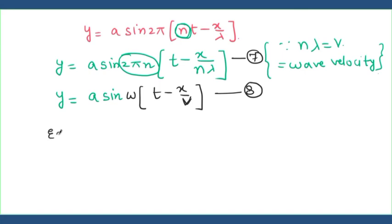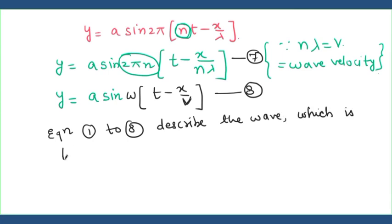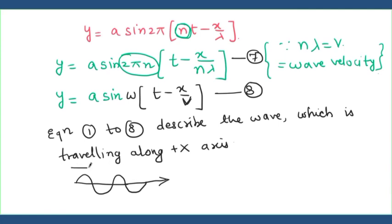Rewriting equation number 5, taking n common: y equal to a sin 2 pi n bracket t minus x upon n lambda. Now as we know that n lambda equals v, where v is the wave velocity. So equations 1 to 8 describe the wave which is travelling along positive x axis, going from left to right in the positive x direction.